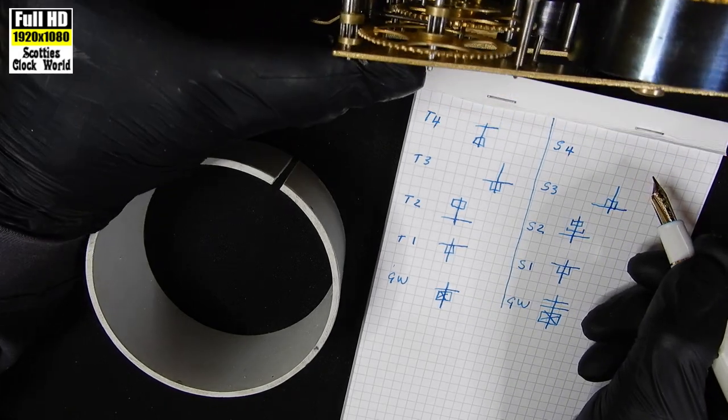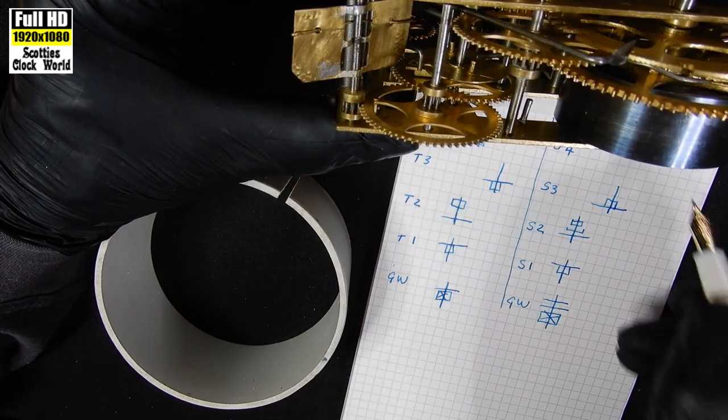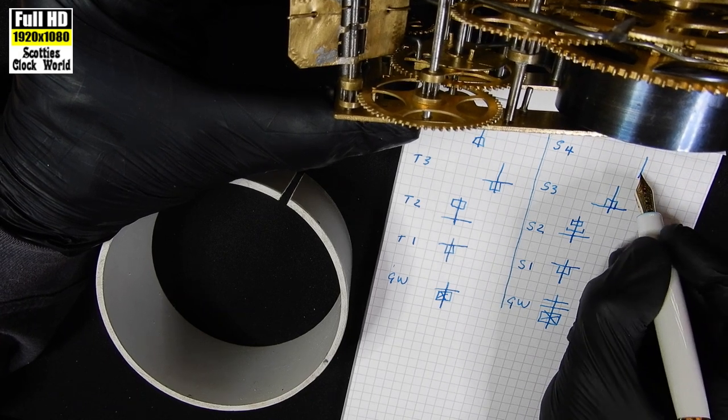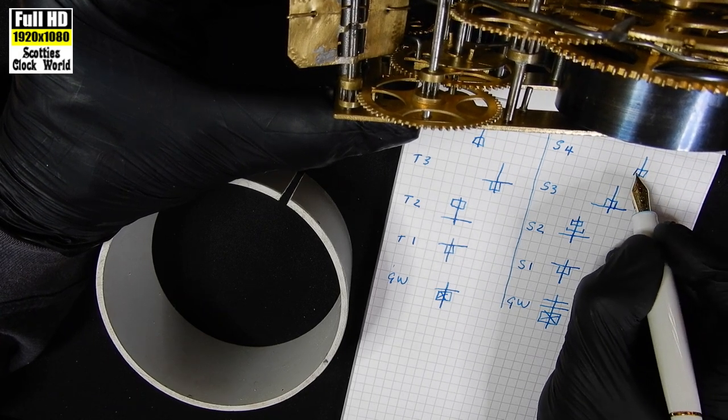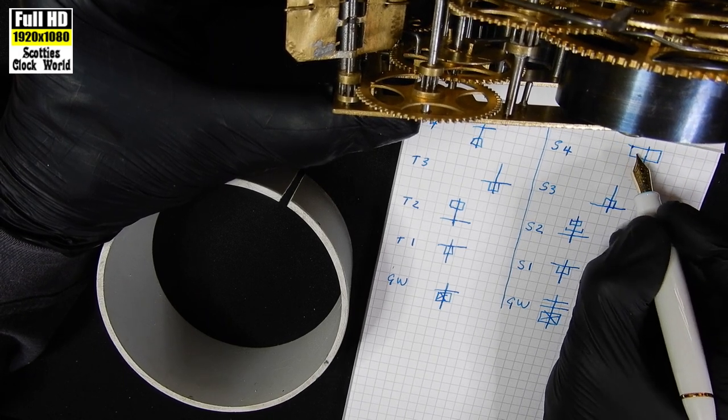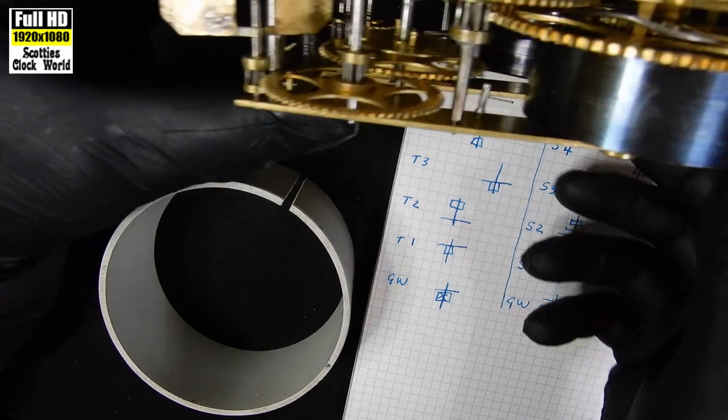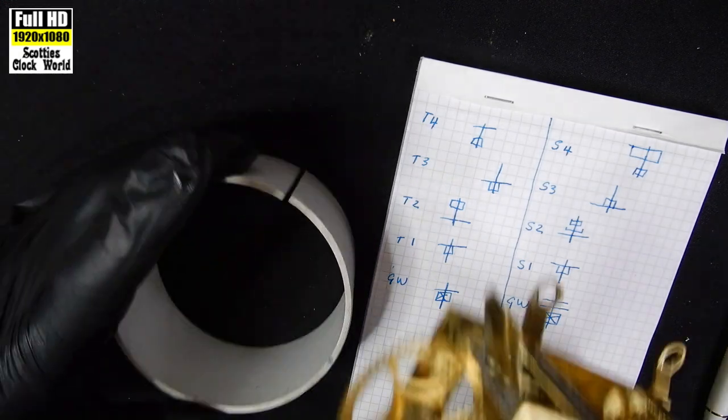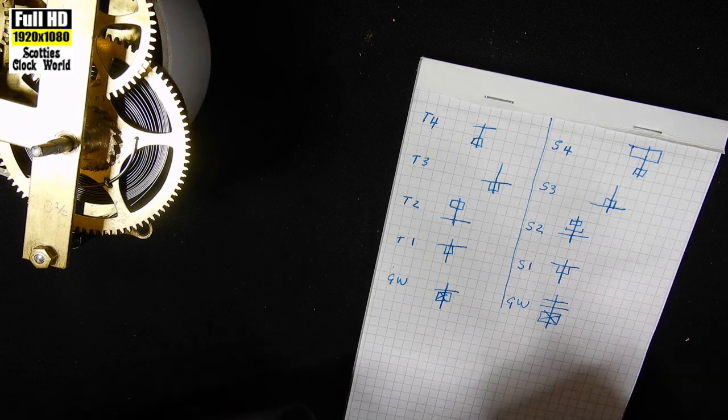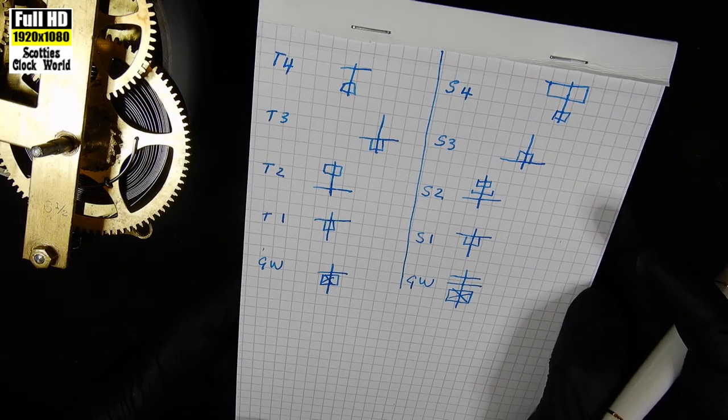And then the fourth wheel, as such, which is the fly. We can draw that easily up here. It has a pinion down the bottom. And the fly up at the top. That's our graphic representation of where the wheels sit.